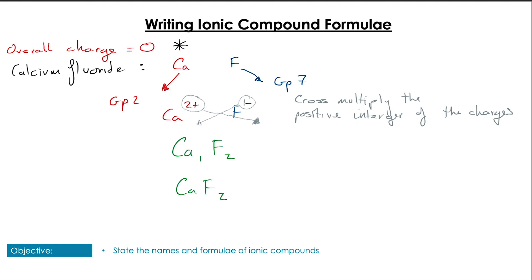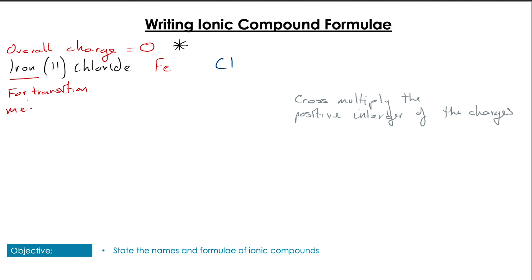Cross-multiplying gives us Ca times 1, but we always use the positive integer, and fluorine times 2, giving CaF2. Let's try the same again, but this time with iron(II) chloride. Here we have iron, and because the oxidation state is given in the name, we know it's Fe2+. Chlorine is in group 7, so we have a 1- charge. Cross-multiplying gives us Fe times 1 and chlorine times 2, giving FeCl2.